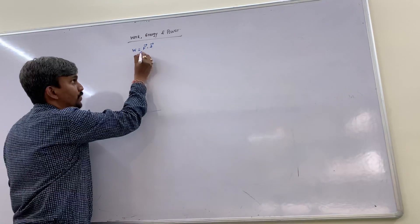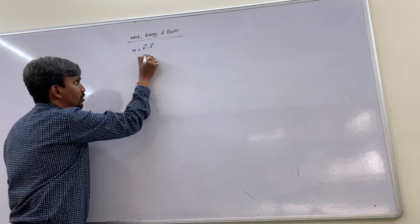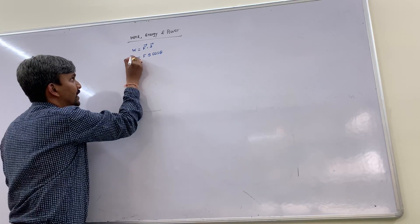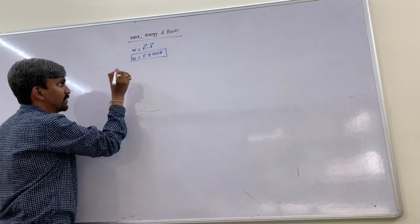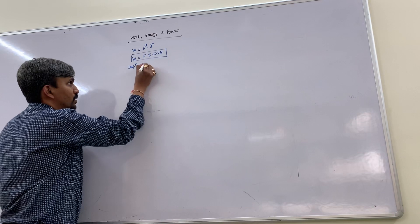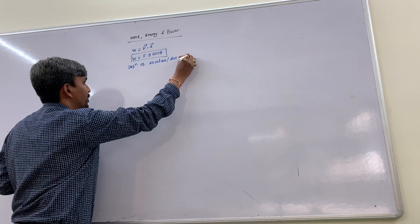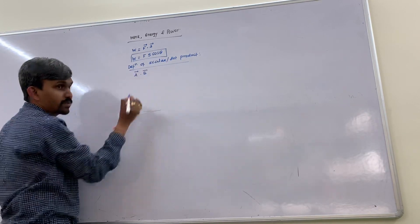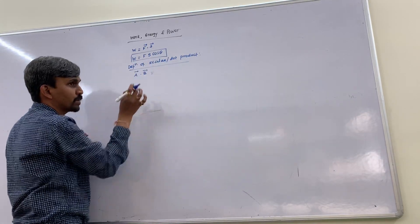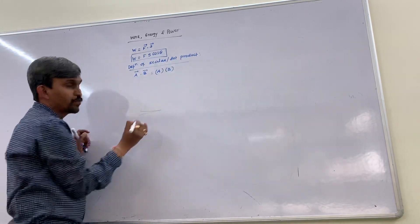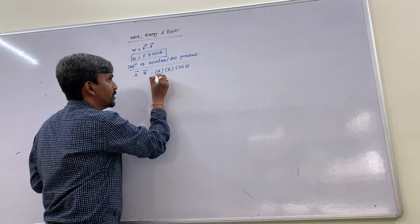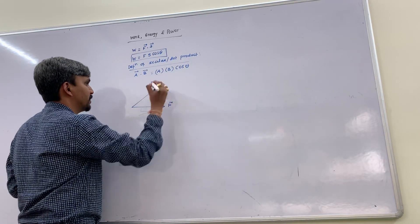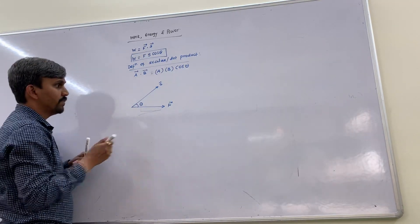The dot product is of two vectors: one is force and the second is displacement. This gives us W = F·S·cosθ. This cosθ comes from the definition of the scalar or dot product. The definition says: the dot product of two vectors A and B is the product of the magnitudes of the two vectors and the cosine of the angle between them. Here, one vector is force and the other is displacement, and the angle between them is θ.